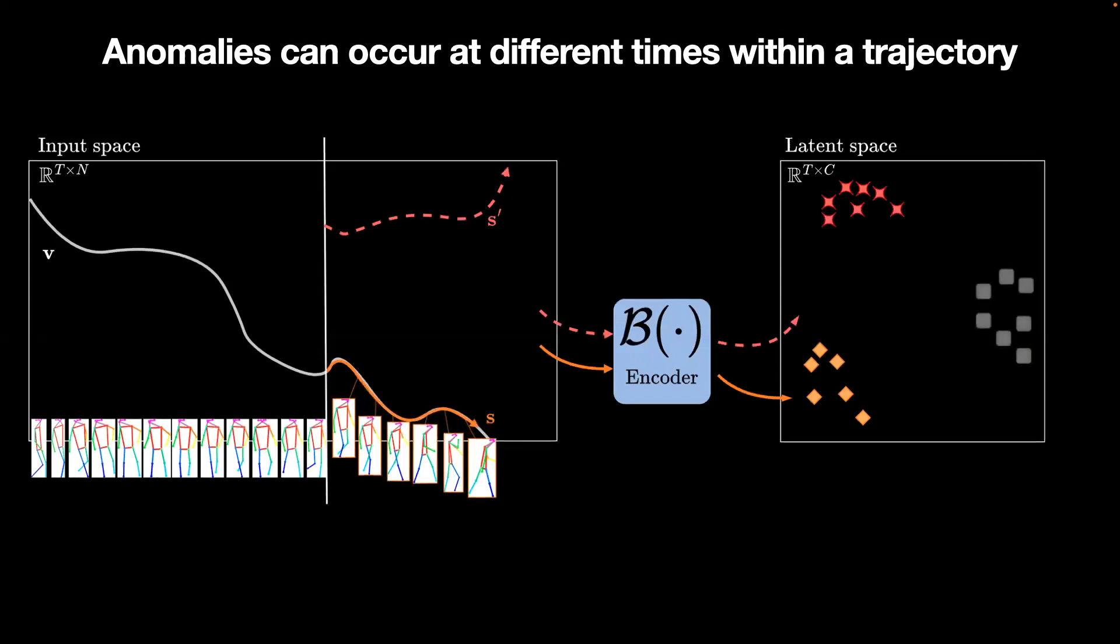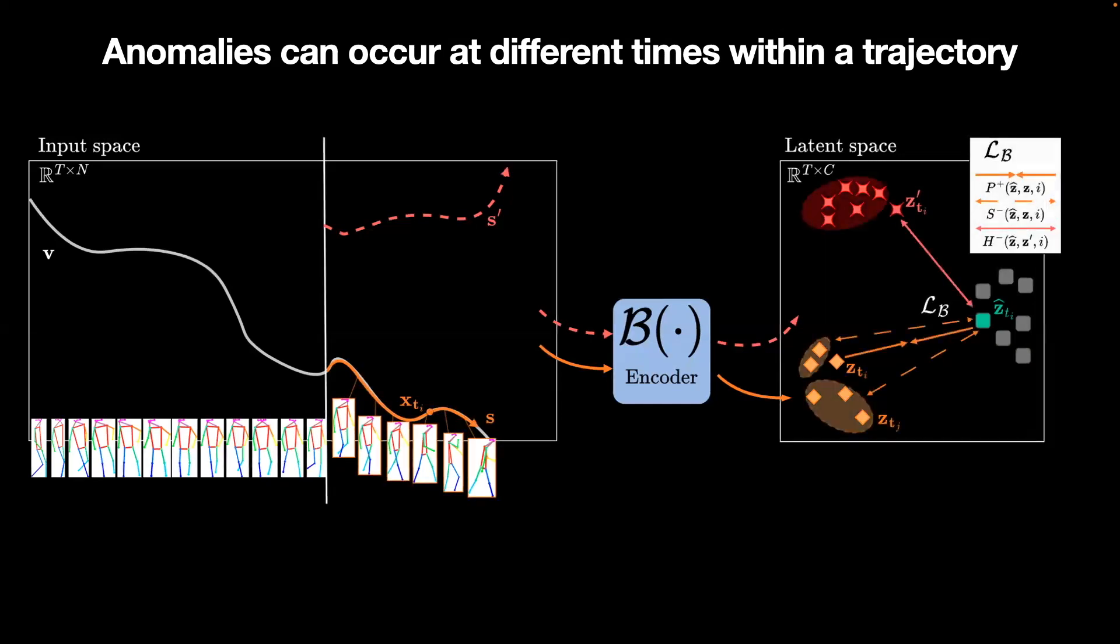We define a set of latent vectors that we learn through triple loss. Each latent vector should be drawn near to corresponding encodings from the original trajectory segment and drawn further apart from encodings from different trajectories. We thus define positive pairs with the encodings from the trajectory segment at the specific temporal location, and negative pairs otherwise.